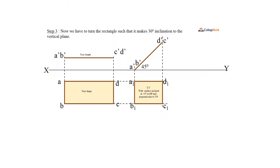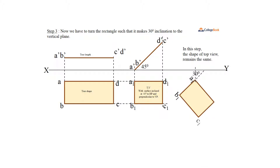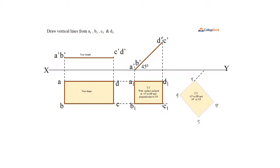Step 3: Now we have to turn the rectangle such that it makes 30 degrees inclination to the vertical plane. In this step, the shape of the top view remains the same. To draw the front view, draw vertical lines from A1, B1, C1, and D1.